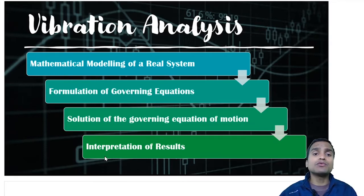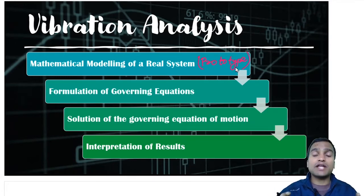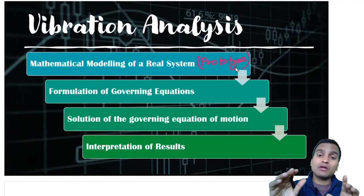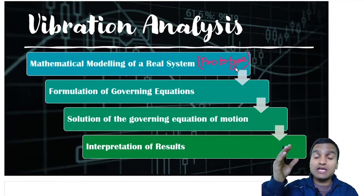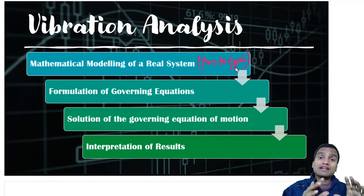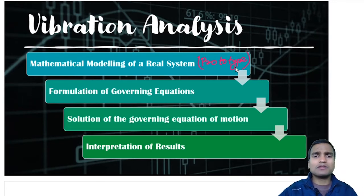In the first stage, we model a real system mathematically. A real system is the system that exists in our real life, and it is also called a prototype. For example, a dam is a real system and a prototype. We make a model of that prototype similar to all its dimensions and conditions in our lab — the model size being much smaller than the actual prototype. We can make a model of a dam in the lab, perform experiments, observe, and interpret the results.